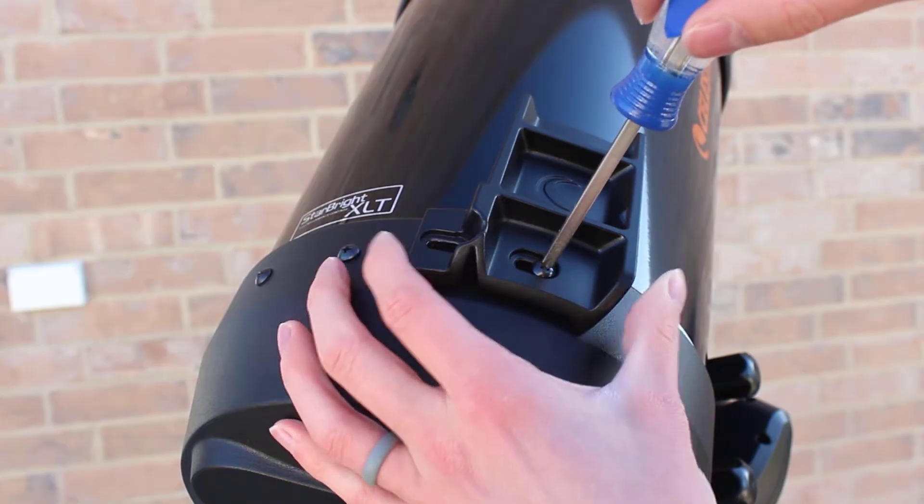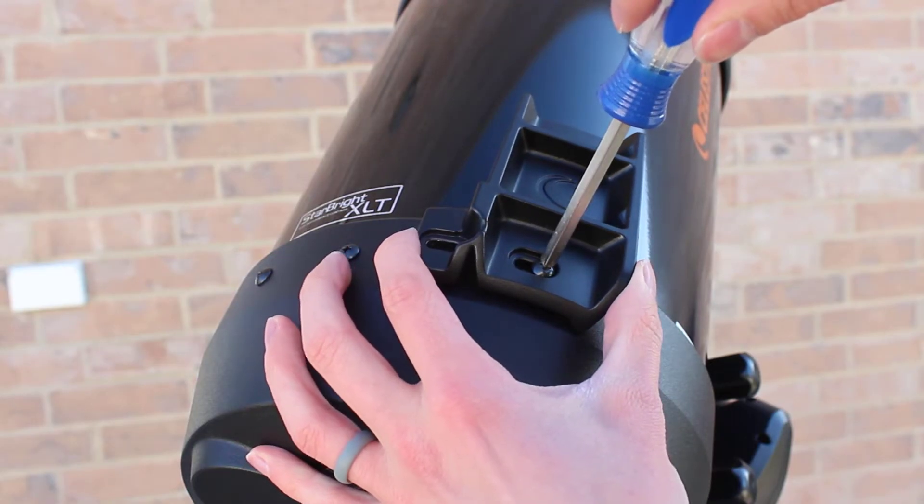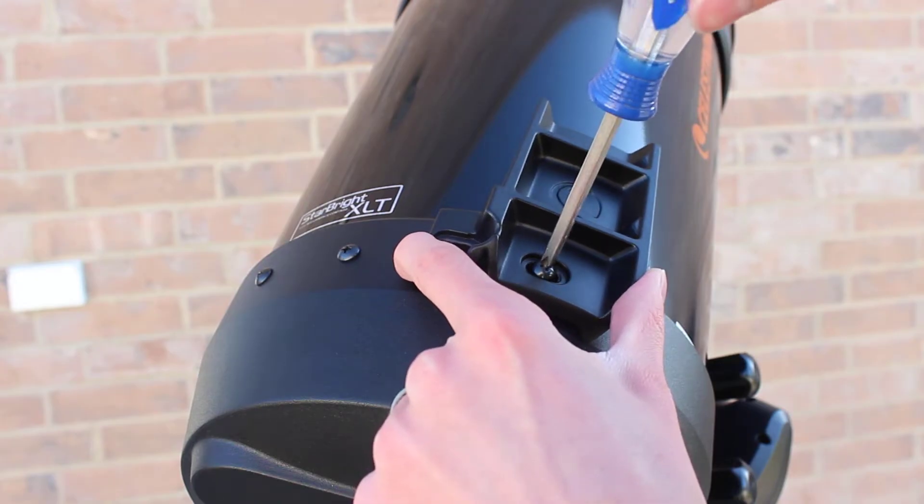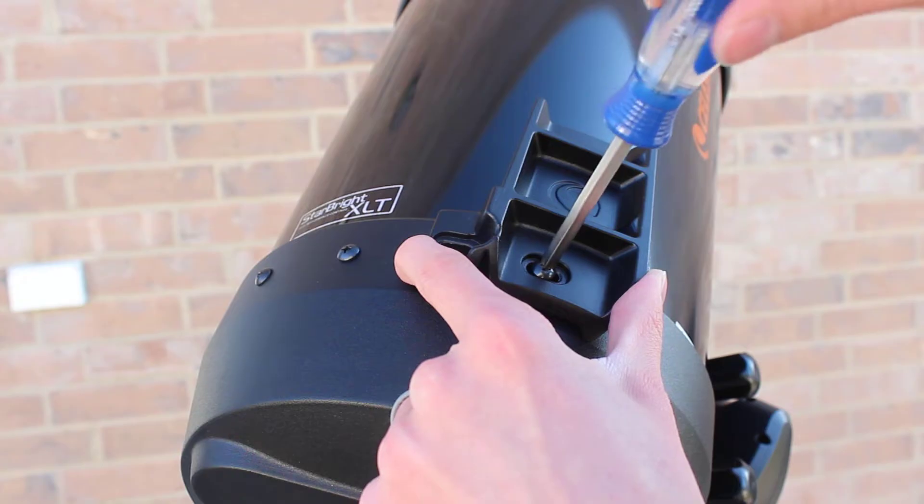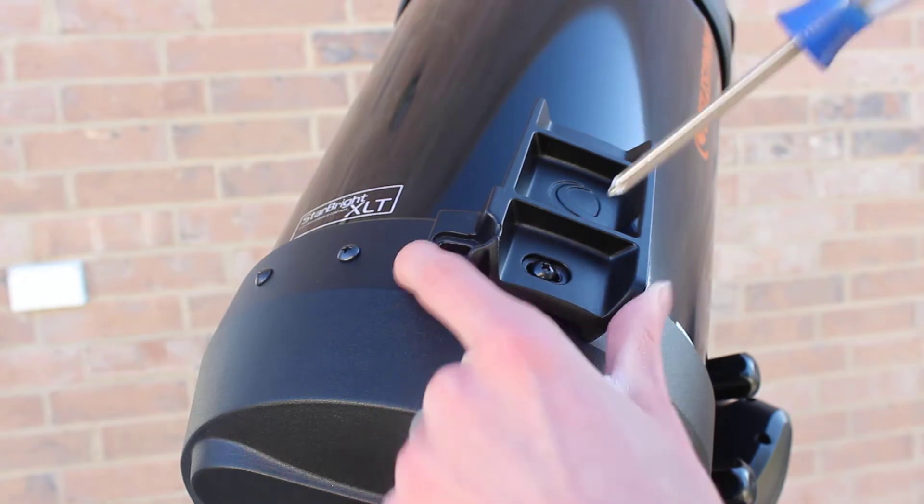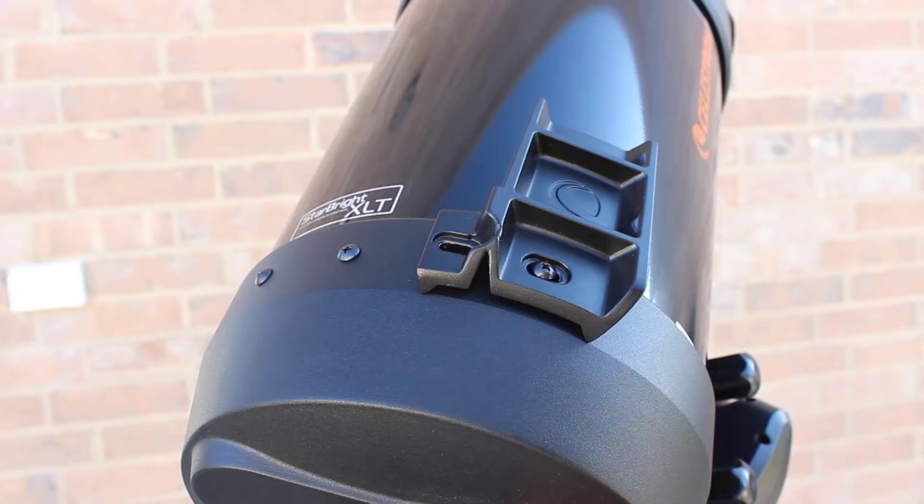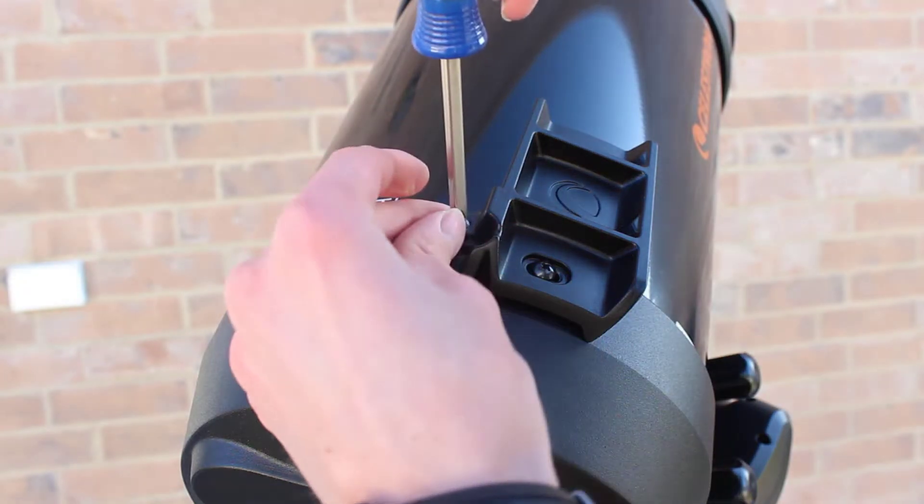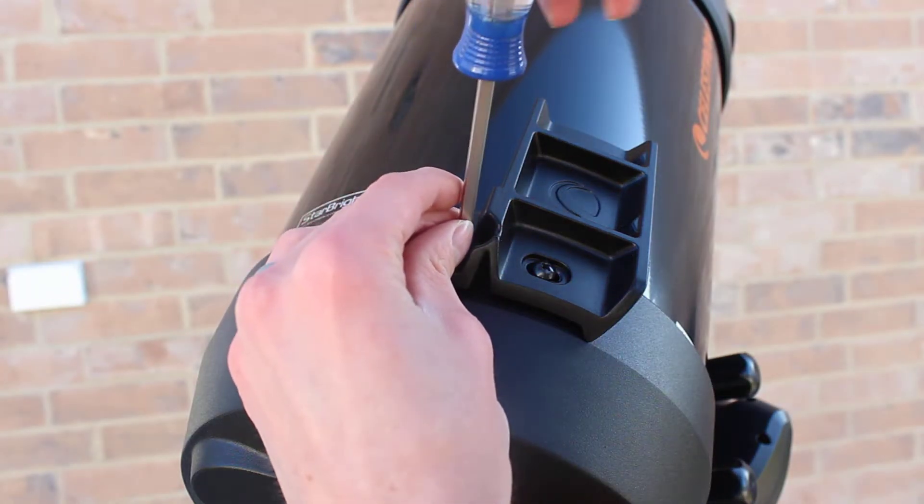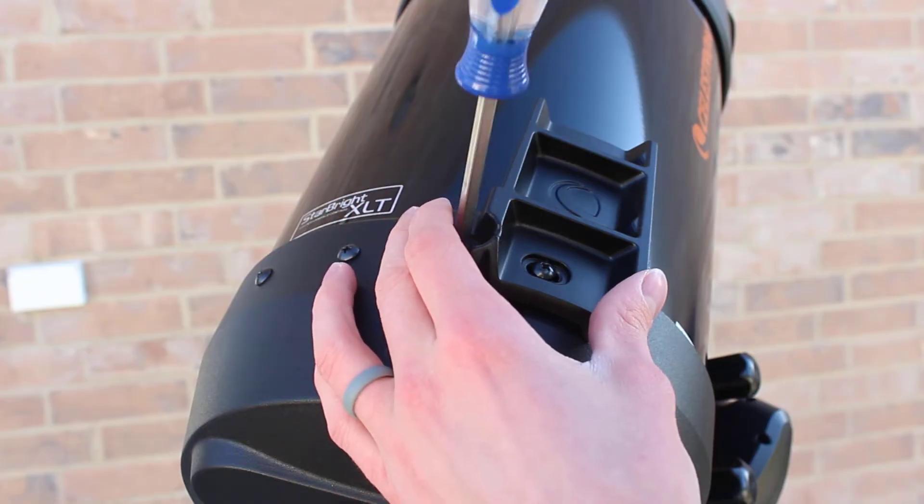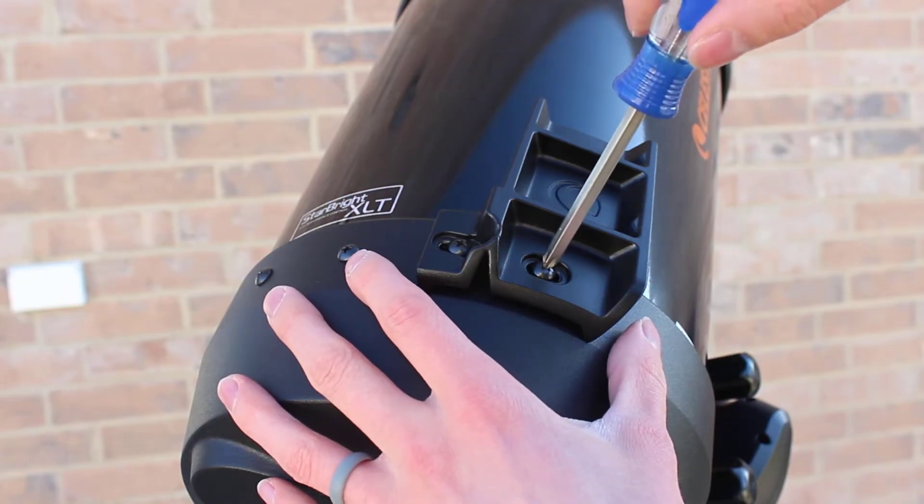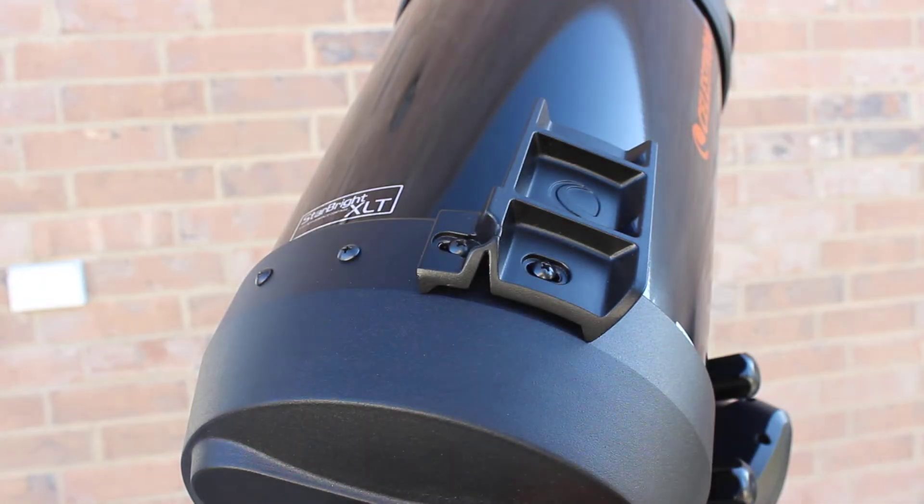Just make sure that's straight. It's a little off. Alright, so I'm just going to tighten this down. That looks pretty straight. Nice and easy. That simple. We're ready to put on the StarSense.